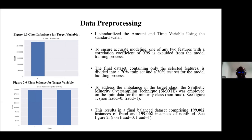Before building the model, I performed data preprocessing. First, I standardized the amount and time variables using a standard scaler, given that a PCA transformation was not applied to them. Secondly, I addressed multicollinearity, where any two features with a correlation coefficient of 0.99 were excluded from the training process. After exclusion, the data sample was split into 70% for the training set and 30% for the test set.